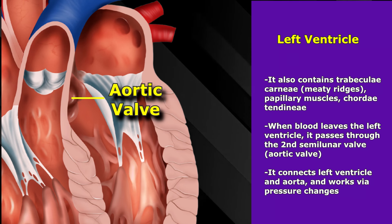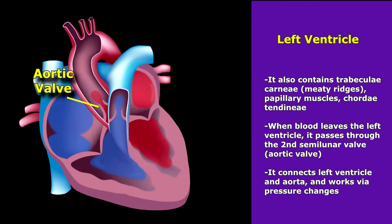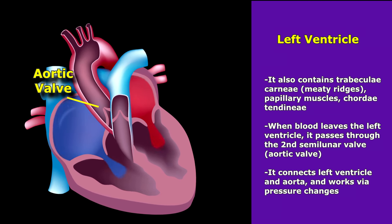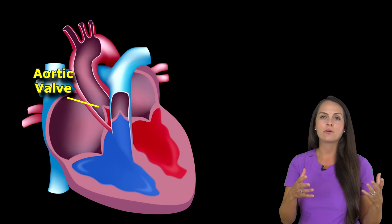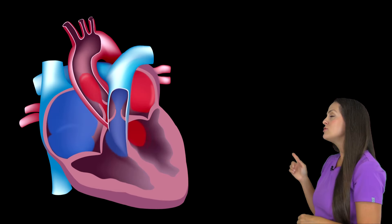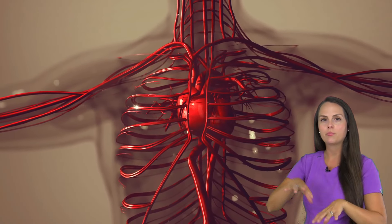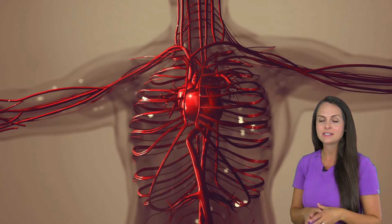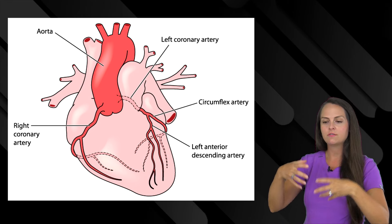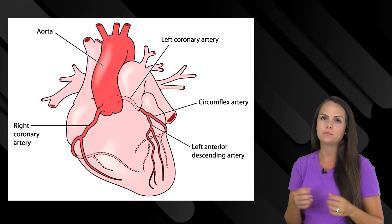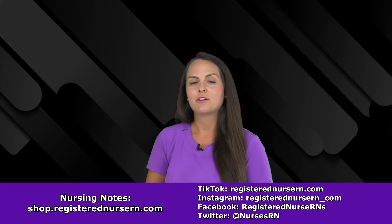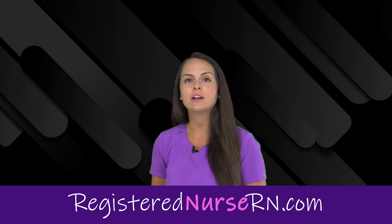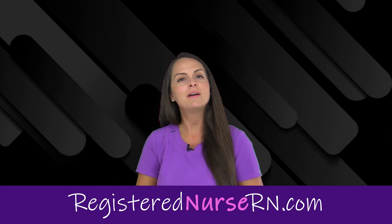When blood leaves the left ventricle it passes through the second semilunar valve, the aortic valve, which connects the left ventricle to the aorta and works the same way as the pulmonic valve based on pressure changes from ventricular contraction and relaxation. After passing through the aortic valve, blood enters the aorta, travels up through the ascending aorta, and is distributed throughout a network of arteries branching off it. Among those important branches are the right and left coronary arteries, which wrap around the heart and supply the myocardium with fresh oxygenated blood. For more on the coronary arteries and the layers of the heart, check the links below — thank you so much for watching.